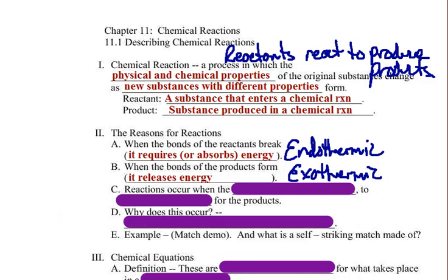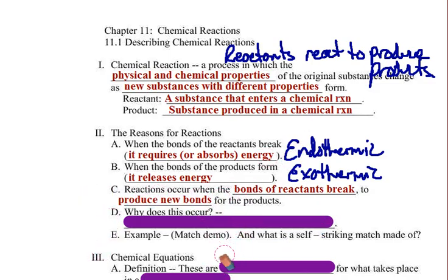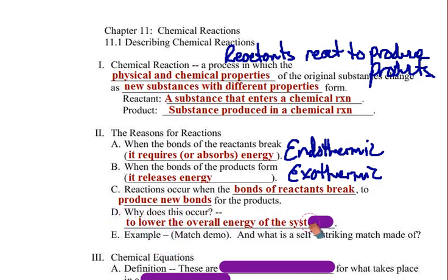Reactions occur when the bonds of the reactants break in order to produce new bonds for the products. So you have to break some eggs in order to make your omelet. Reactions occur to lower the overall energy of the system.